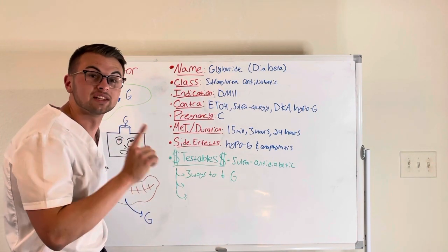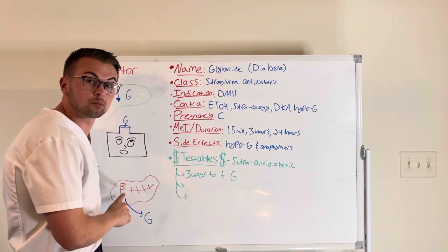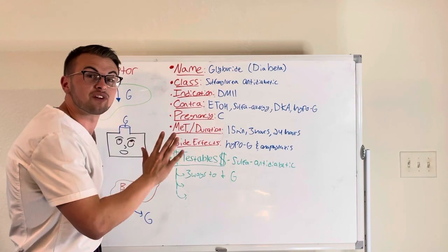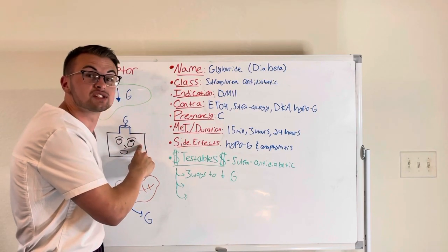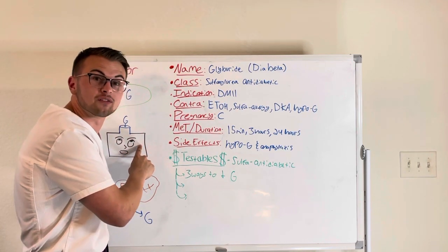Diabeta releases insulin to lower blood glucose, it prevents glucose formation in the liver, and it makes our cells more sensitive and receptive of insulin.